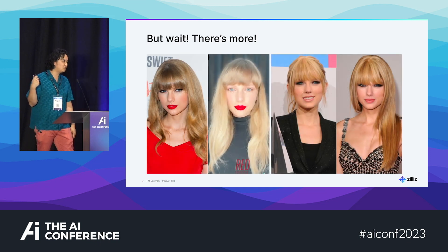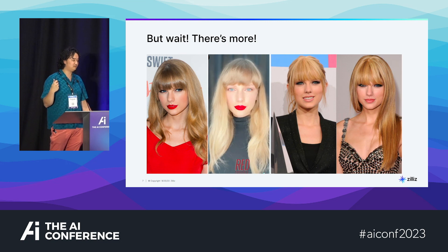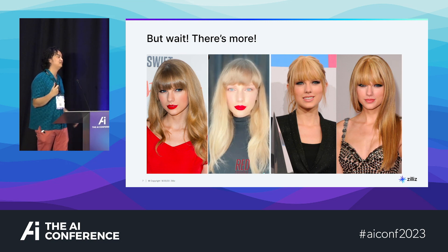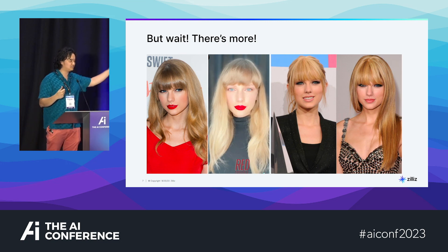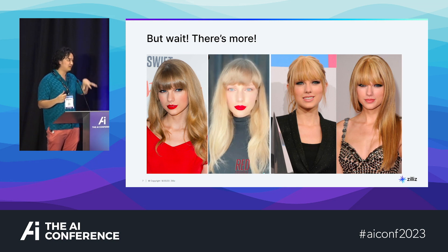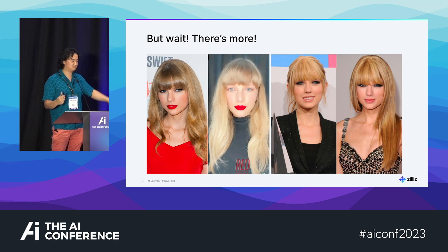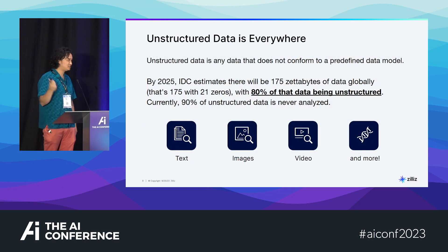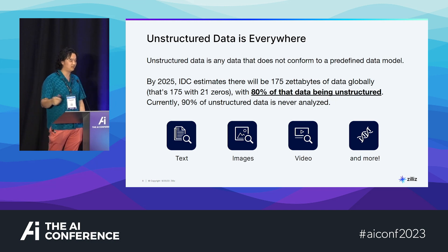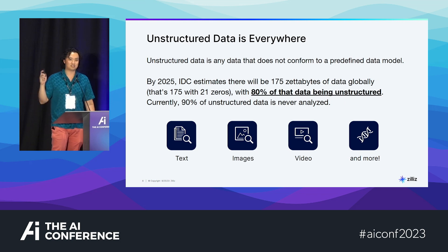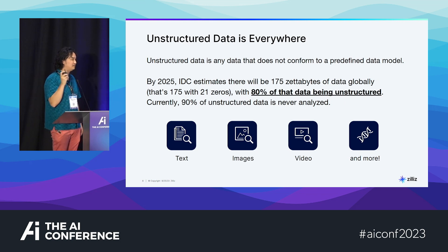And it's not just text. You can also do this with images. For example, this is my favorite artist, Taylor Swift. If you were to look for this image of Taylor Swift in a database, you could get back the most similar images of this celebrity if you had a database of celebrities. It also works on audio data, video data, and typically any type of unstructured data you can think of, as long as you have the embeddings model that can handle that kind of data.